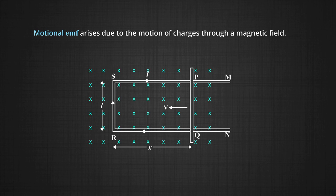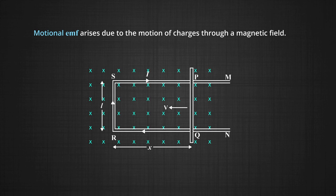Motional EMF arises due to the motion of charges through a magnetic field. In this figure, the conducting rod is moving with a velocity V in a uniform magnetic field B directed into the paper. So the loop area is decreasing and the flux associated with it is decreasing. According to Lenz's law, the loop will induce a current upon itself to keep the flux the same, in a direction given by Fleming's right hand rule — from P, S, R, Q — that is, in the clockwise direction.